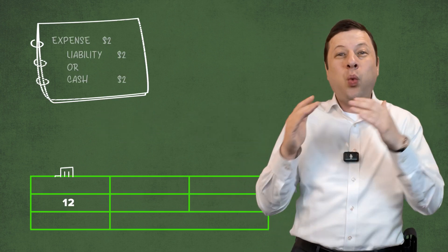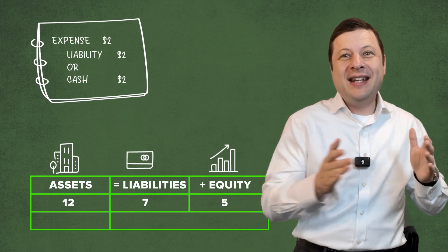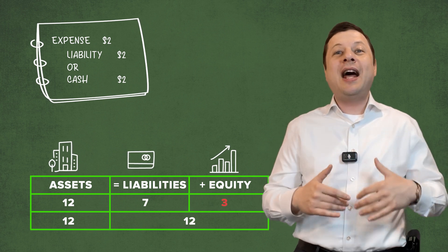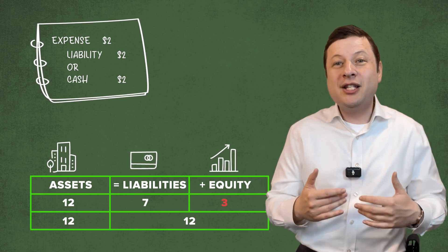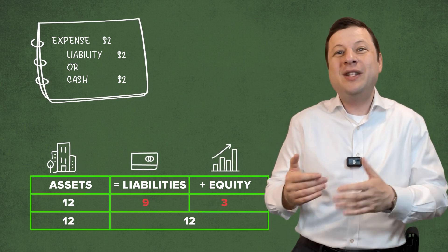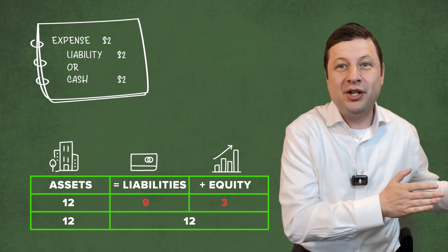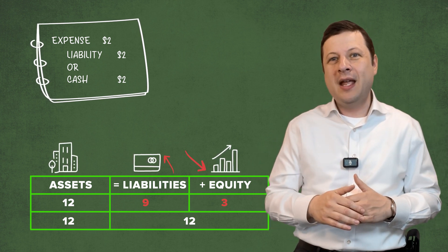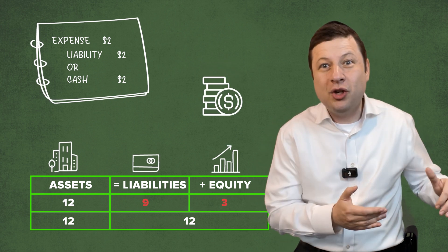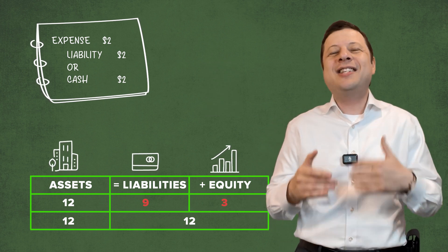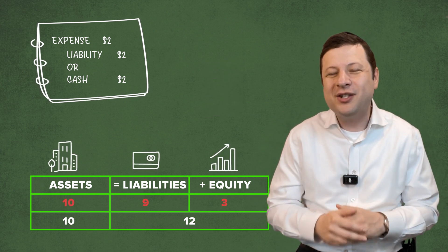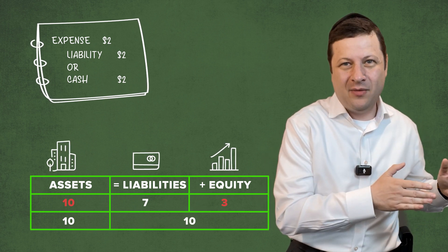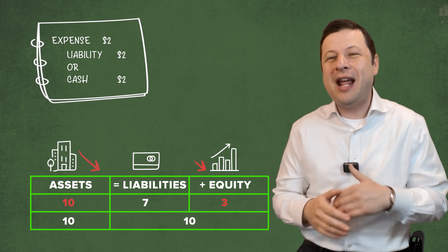You started with 12 equals 7 plus 5. Now equity is down from five to three. If you pay on account, liabilities are up to $9, so it's 12 equals 9 plus 3 — liabilities up and equity down. If you paid with cash, assets are down by $2 to $10: 10 equals 7 plus 3 — two changes, assets down and equity down, keeping the equation balanced.